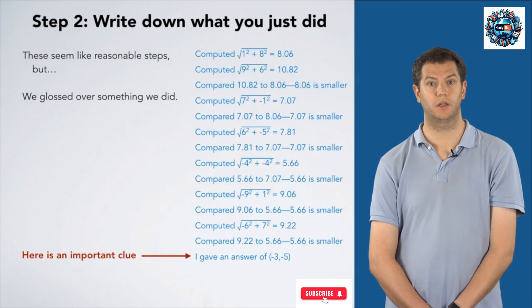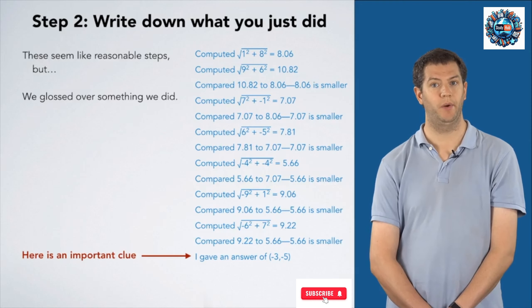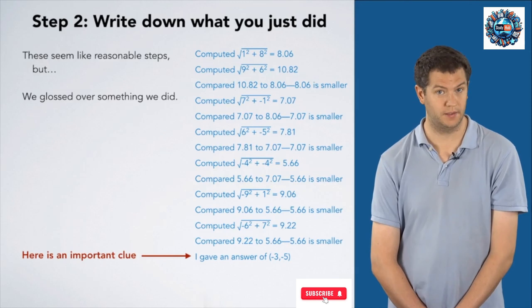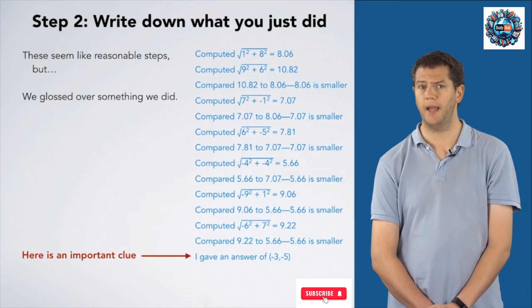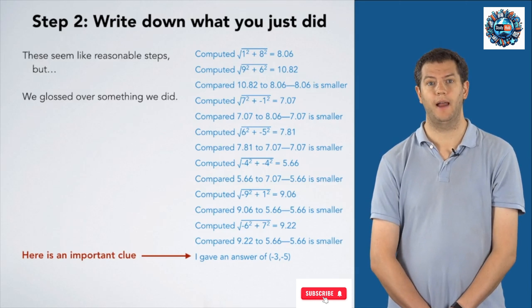Here's an important clue. Look at this step, where we give an answer of (-3,-5). When we go to generalize, we're going to ask, why did we use (-3,-5)?